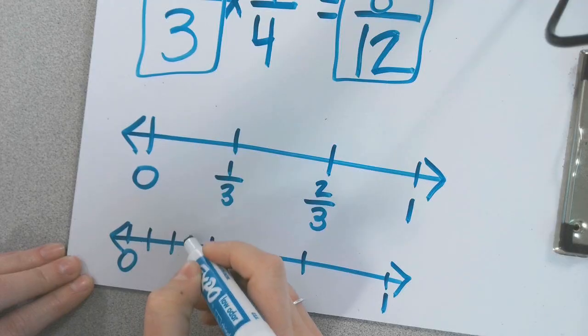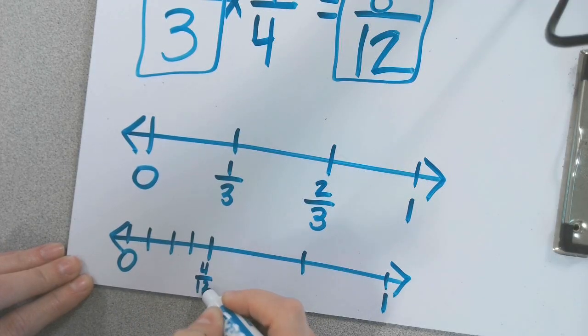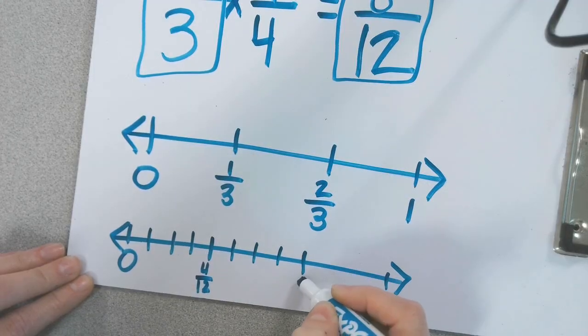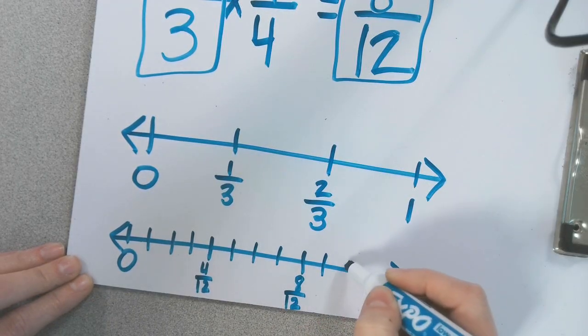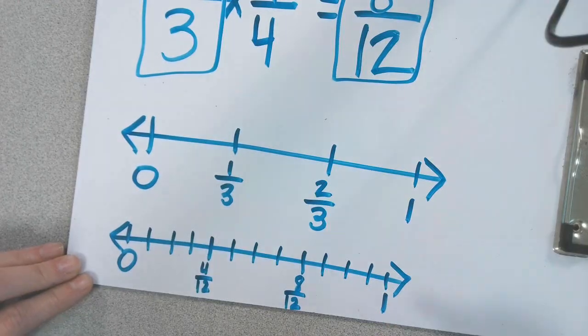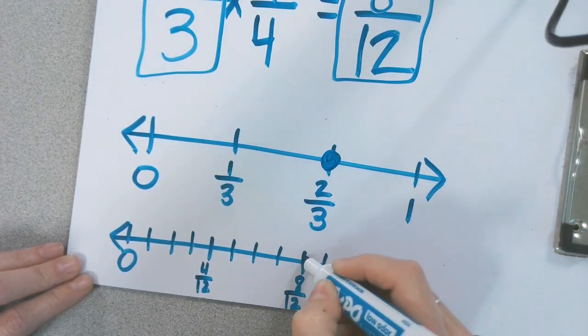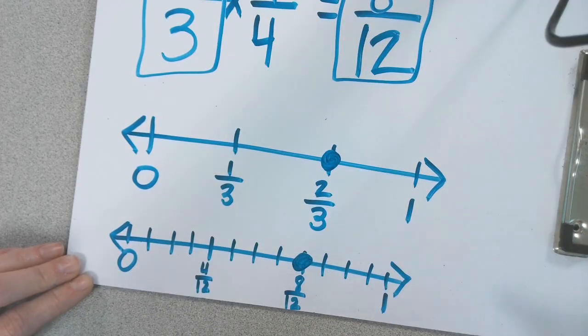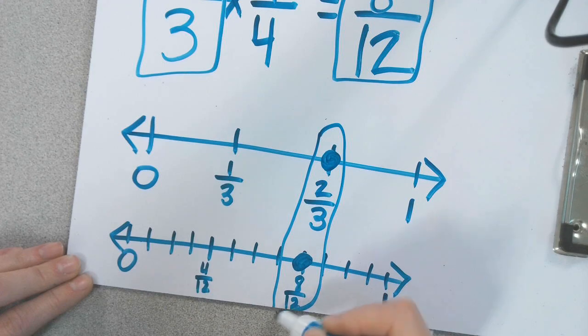1, 2, 3, 4. So this is 4 twelfths. 5, 6, 7. This is 8 twelfths. 8, 9, 10, 11. This is 12 twelfths. So can you see that 2 thirds falls at the same place that 8 twelfths falls on? So those two fractions are equivalent.